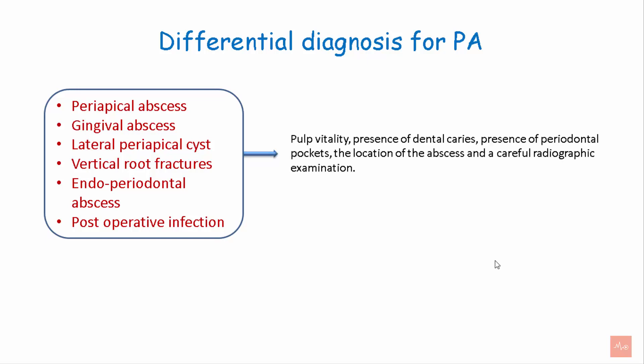Pulp vitality testing shows a vital pulp in periodontal abscess. Periodontal abscess is generally not associated with dental caries. It is associated with the presence of a periodontal pocket, the location of the abscess — which is generally the lateral wall of the pocket — and a careful radiographic examination showing angular bone loss.